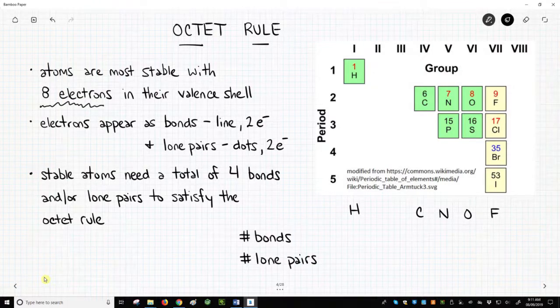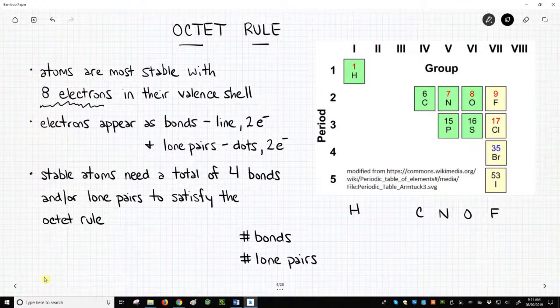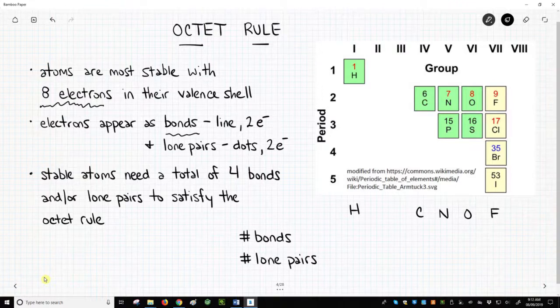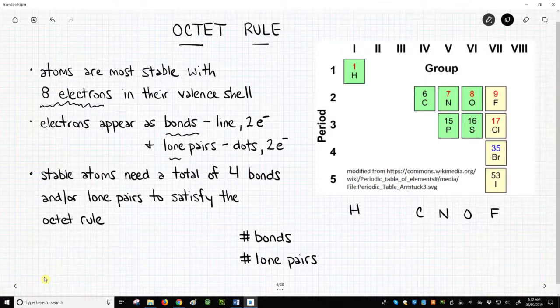Valence shell electrons are the electrons that we draw in pictures of molecules. In molecule pictures, valence electrons are shown either as lines, which are chemical bonds, or as pairs of dots, which are lone pairs with two electrons.